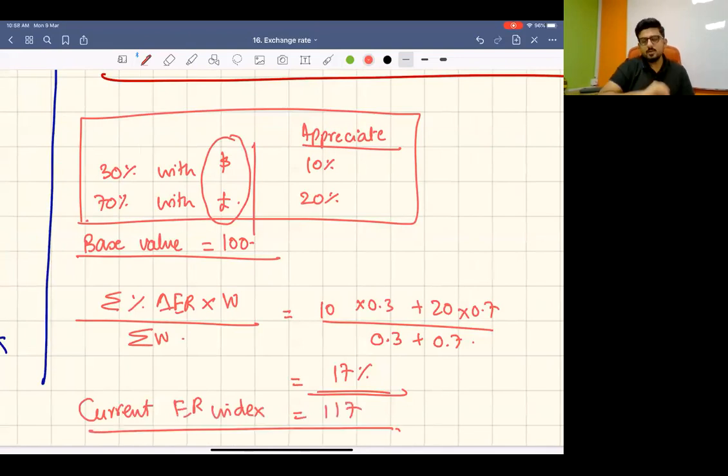Trade-weighted exchange rate is a currency comparison, not against only one country that you trade with, but against a combined basket of currencies, measured as an index value. I hope this is clear. Is this clear, yes or no?